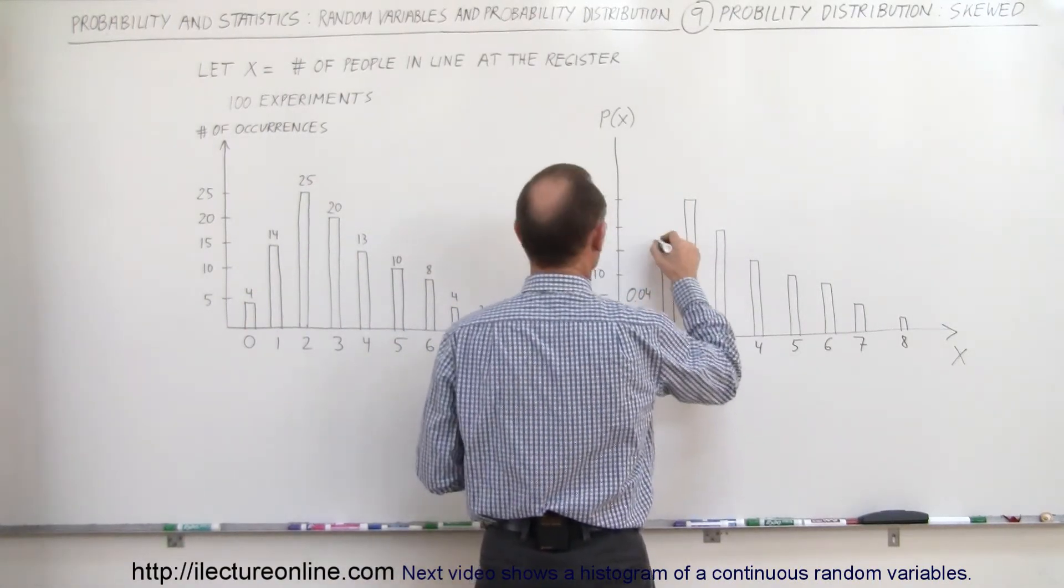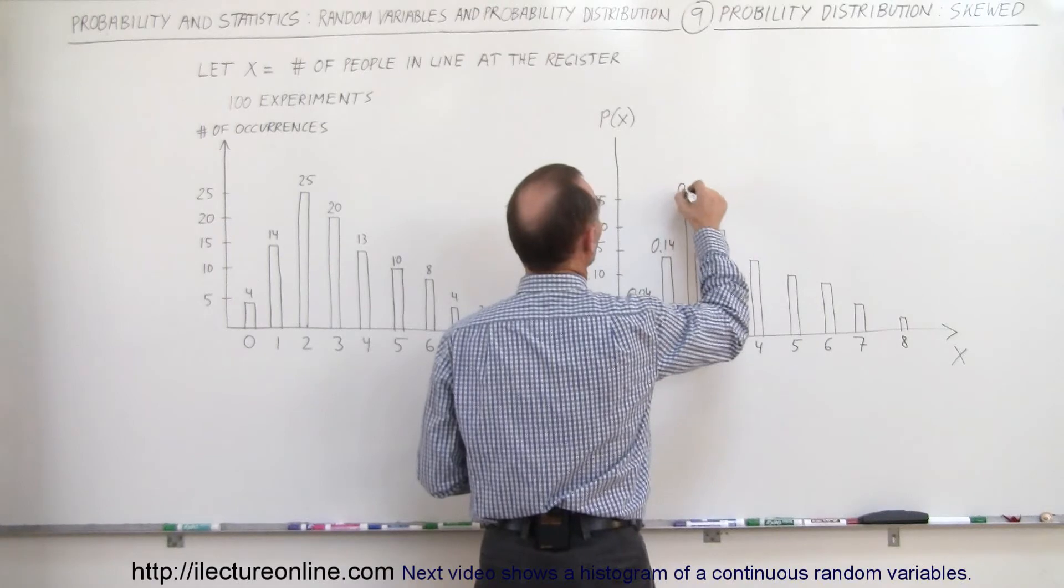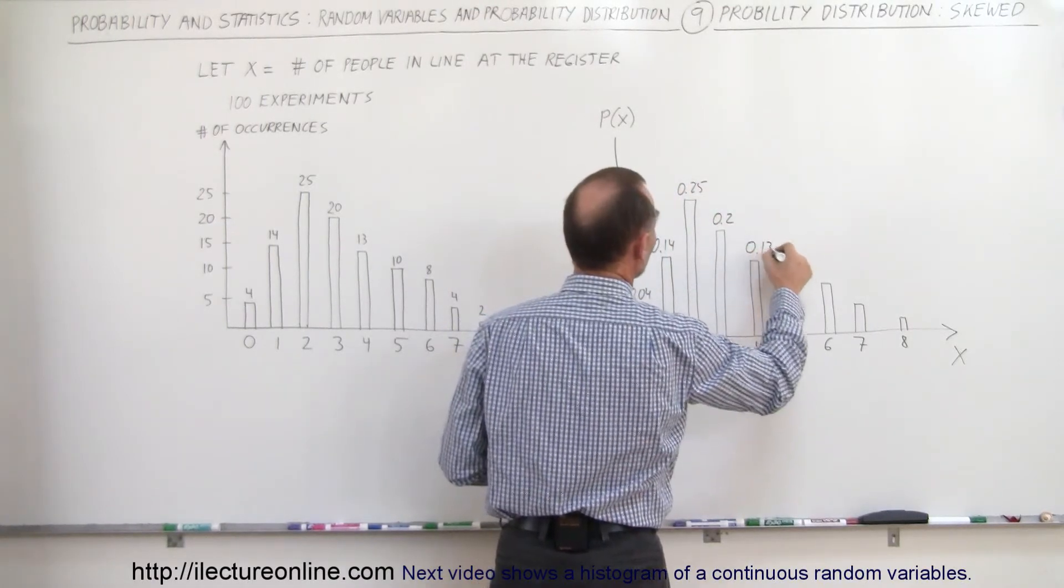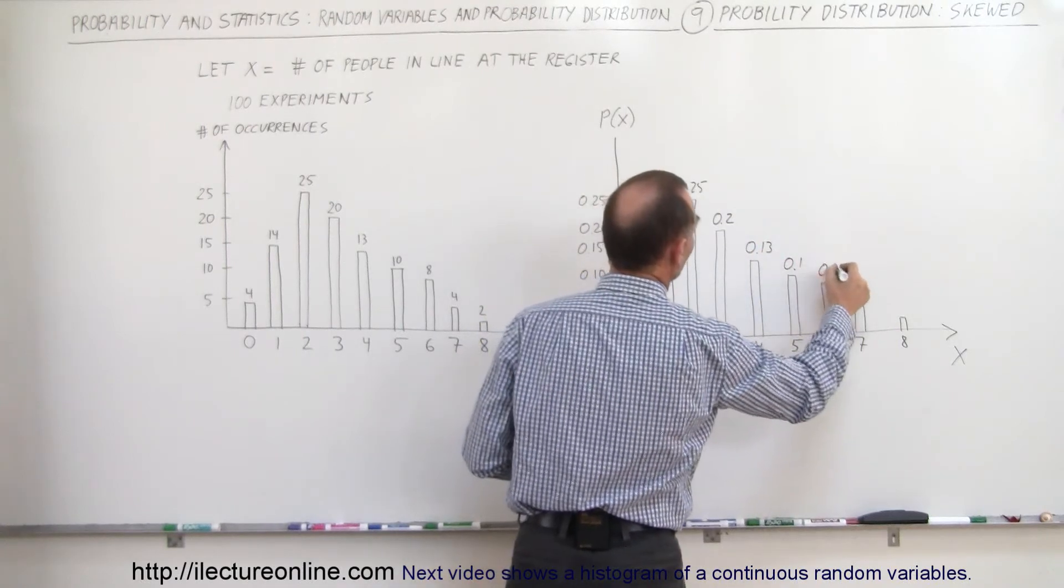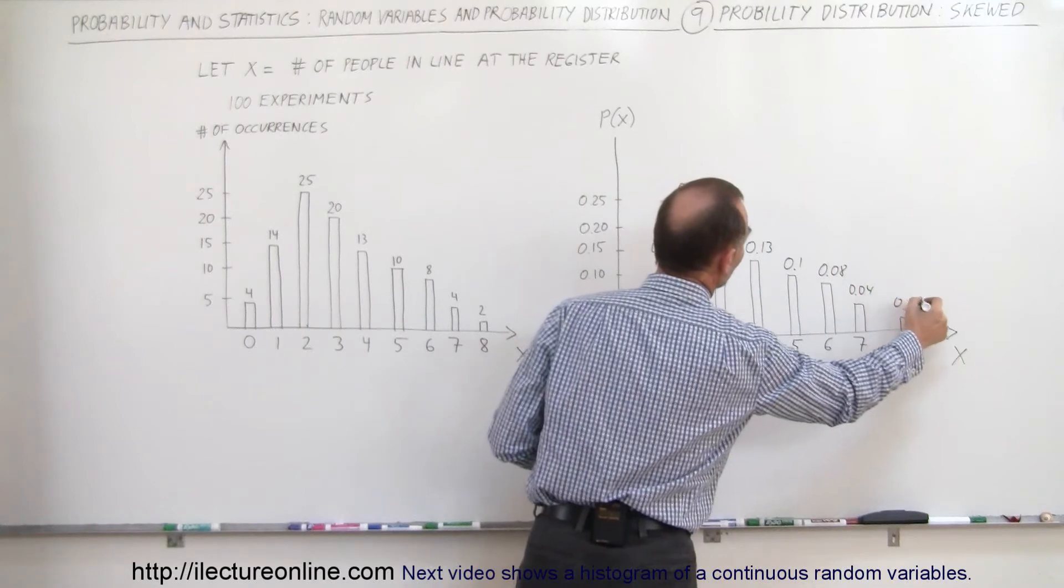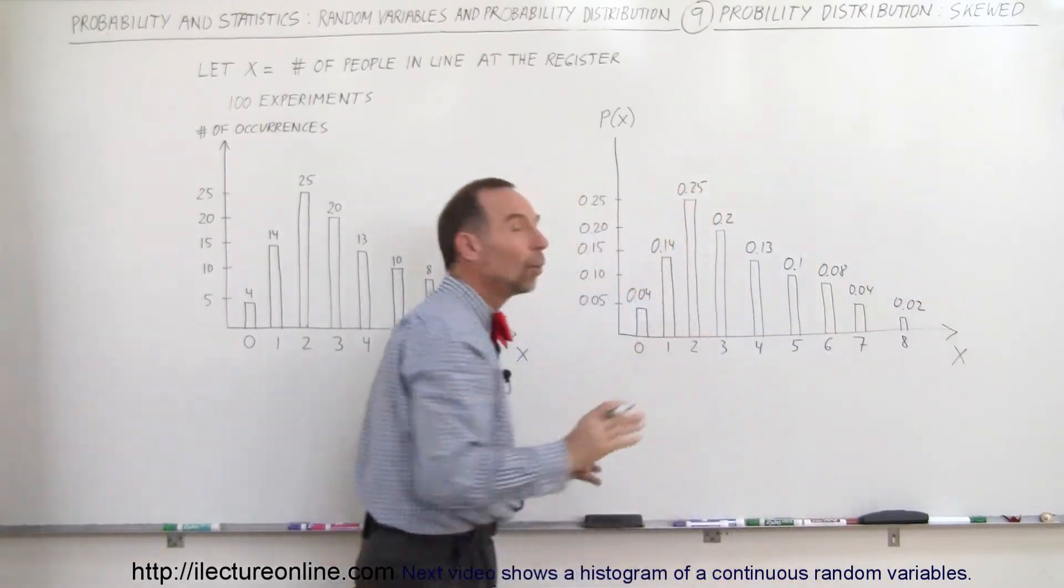this would be 0.13, 0.1, 0.08, 0.04, and 0.02. If you add all those up, you get one.